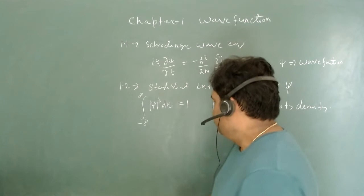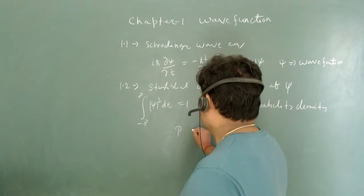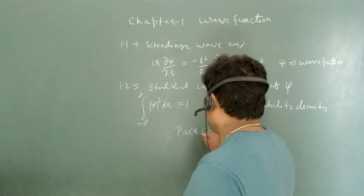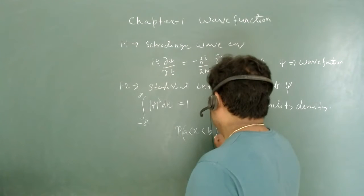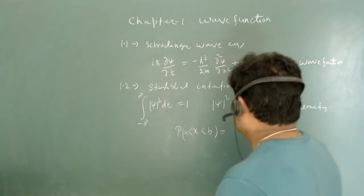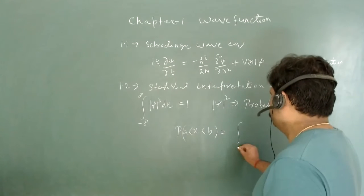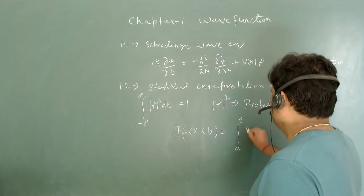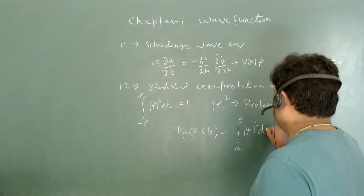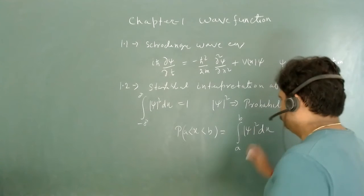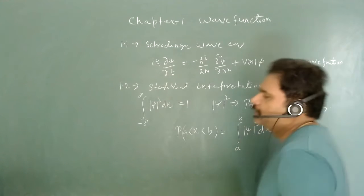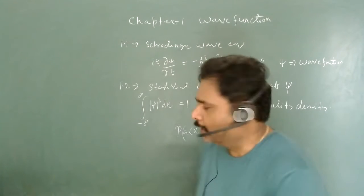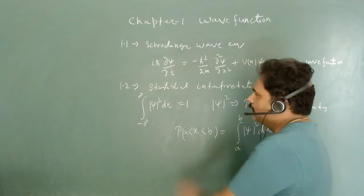If we want to calculate the probability of the particle being between x = a and x = b, then we integrate |ψ|² dx from a to b. This integration we always try to calculate in a very nice manner.